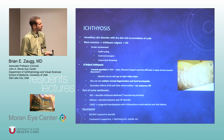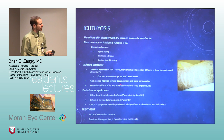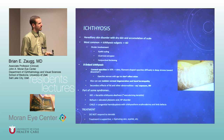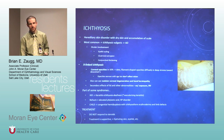Ichthyosis is autosomal dominant, with nasty-looking skin. You get corneal opacities and band keratopathy pretty early on. There are lots of syndromes associated with it. It's all about hydrating the skin — the skin just isn't well hydrated because it's thick.